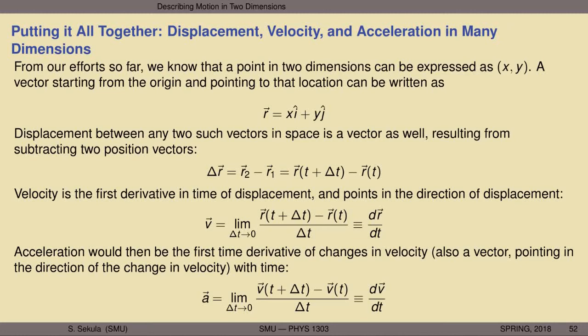Instantaneous acceleration is merely the limit as delta t goes to zero of v(t + delta t) minus v(t) divided by delta t — the definition of the first derivative of velocity with respect to time. In fact, the definition of the first derivative of something with respect to anything else follows this same structure: the quantity evaluated at the original value plus a small increment, minus the quantity at the original value, divided by that small increment, all in the limit that the increment goes to zero. This is a very generic formula for the first derivative.